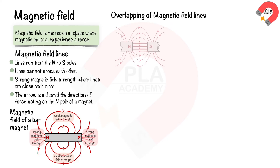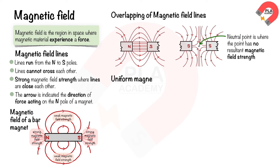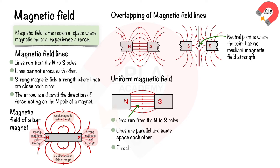The magnetic field line pattern around two magnets with opposite poles shows a neutral point, which has no magnetic field strength and no magnetic force acting on magnetic material. Between two opposite poles, there is a uniform magnetic field: the field lines run from north to south, are parallel and equally spaced, showing that the magnetic field strength remains constant.